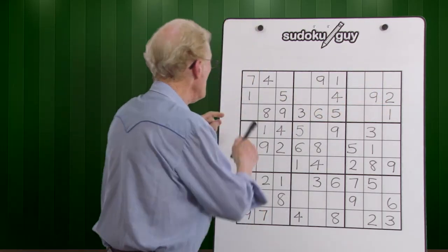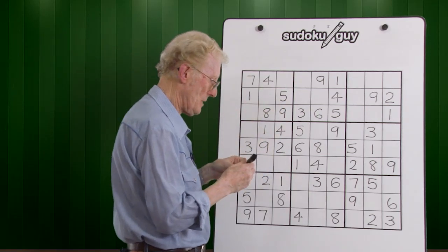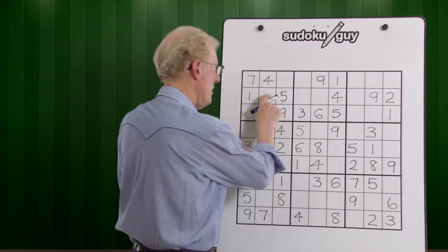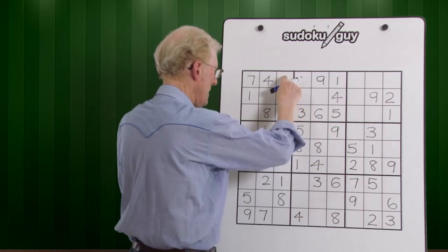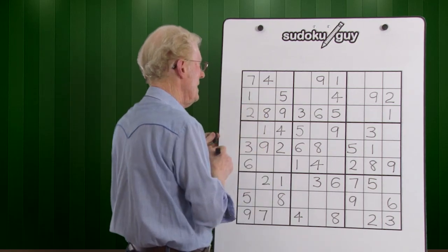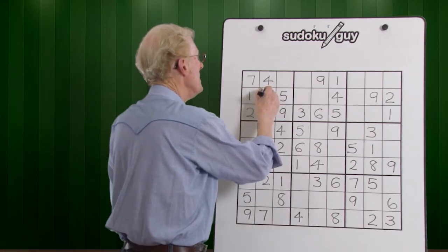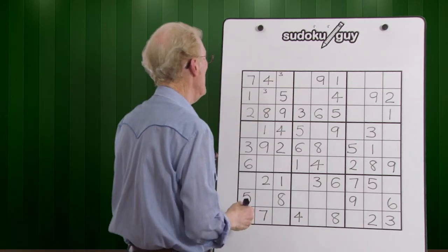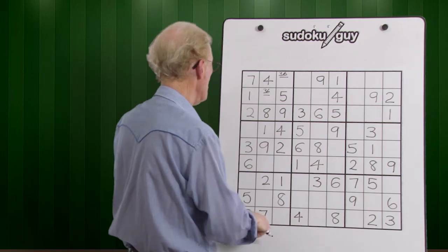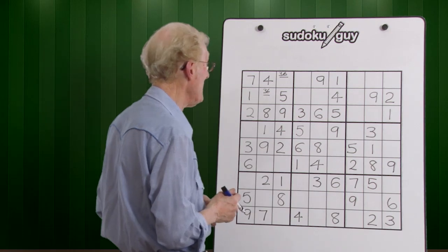Take this one. We look at these three empty cells and we count through to nine to find out which numbers are missing. Two is missing. Two can't go there because of that two, and two can't go here because of this two. Therefore, this becomes the two. Now what you're left with is, believe it or not, a matching pair. We're missing a three and a six. There's no six and no three down here, so you're set.